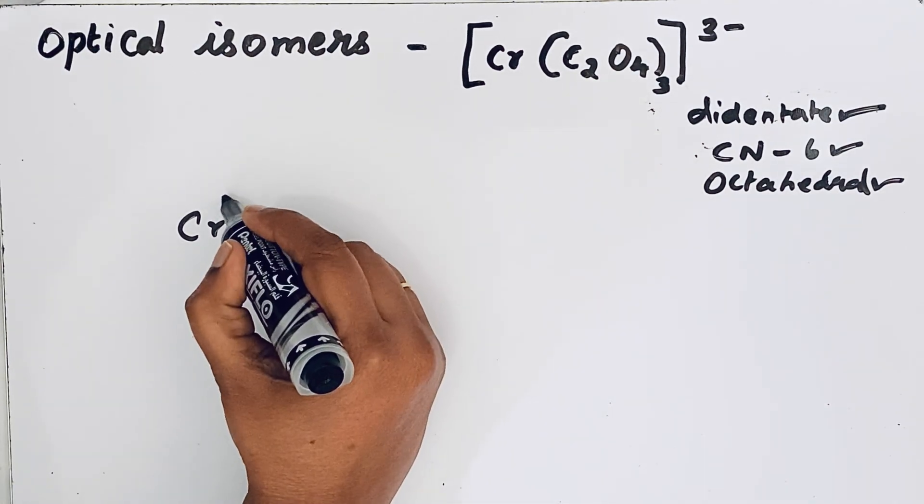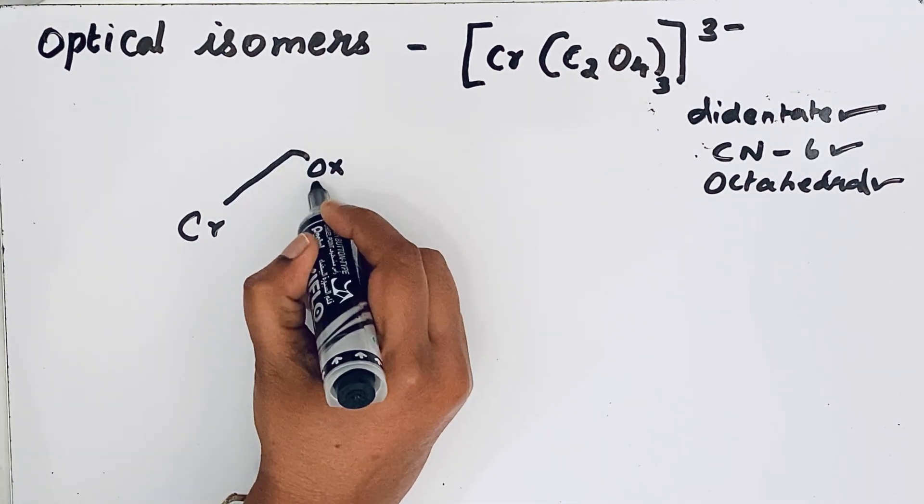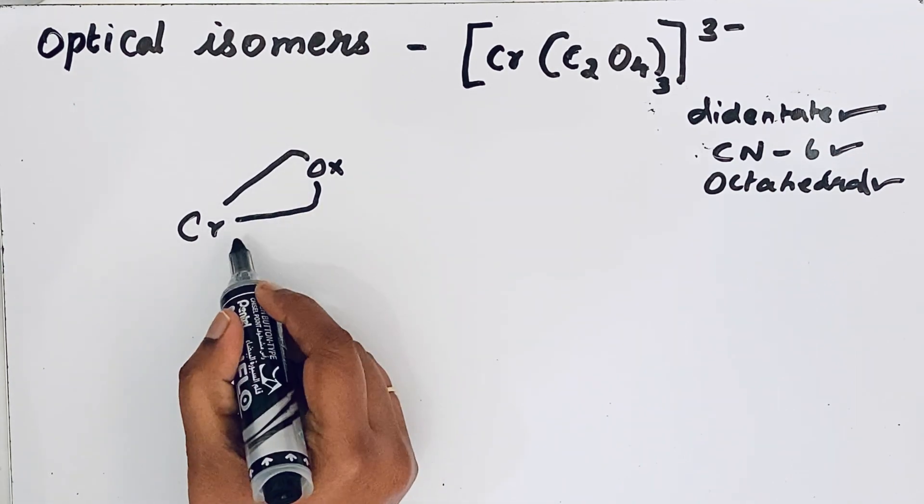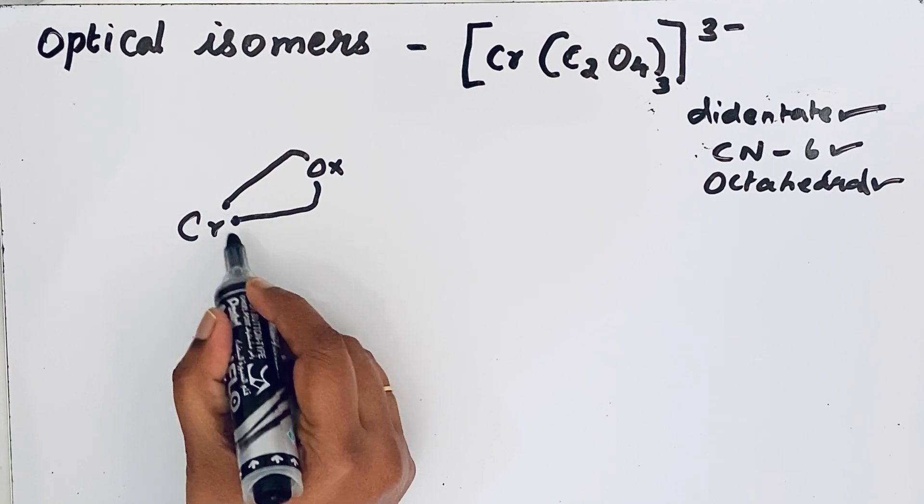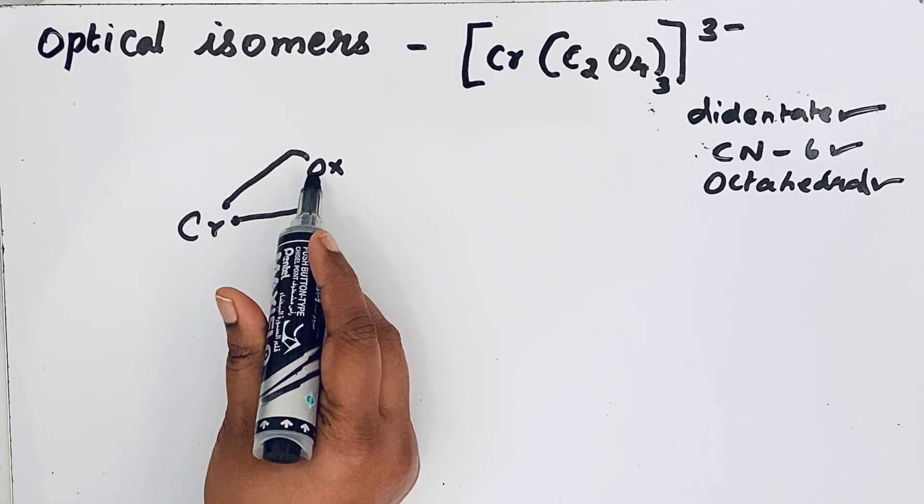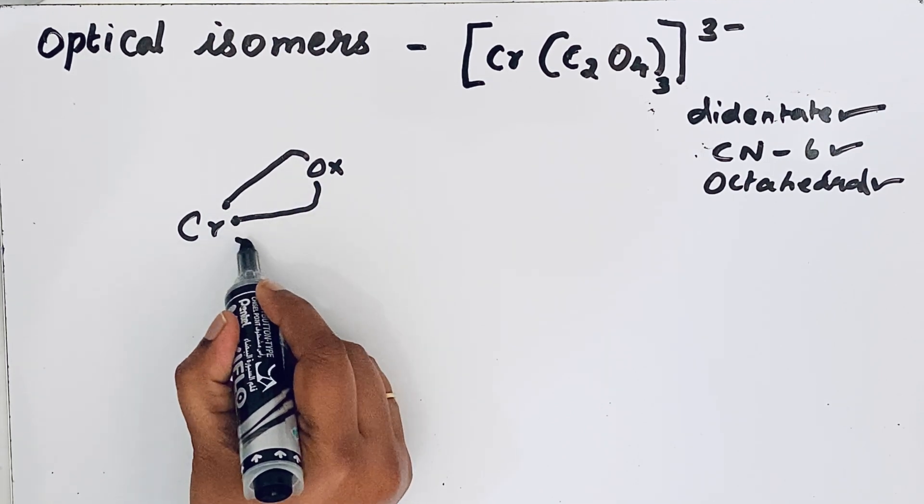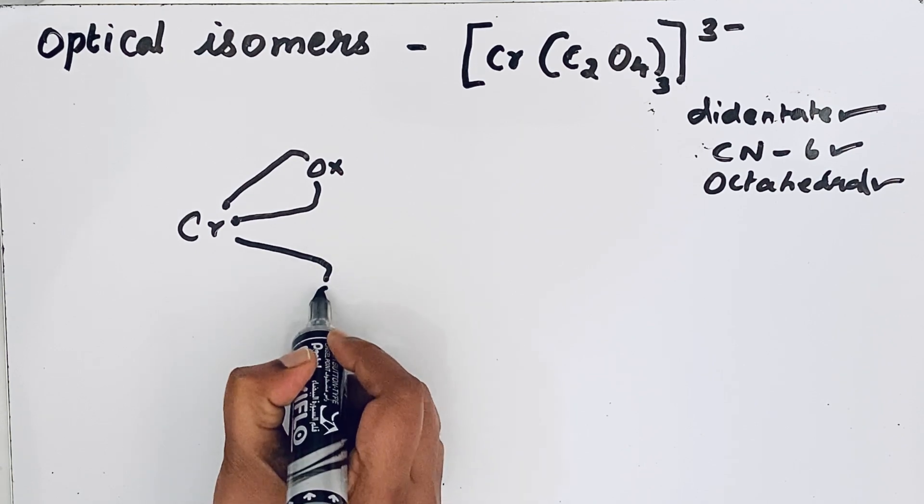So one OX like this. Then another one, two donor atoms. So two donor atoms are attached for a single bidentate ligand. Same way, another one, another one OX.